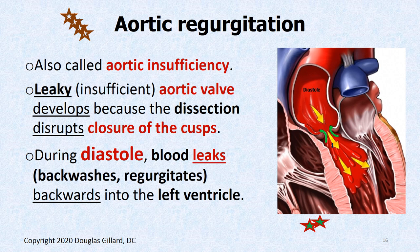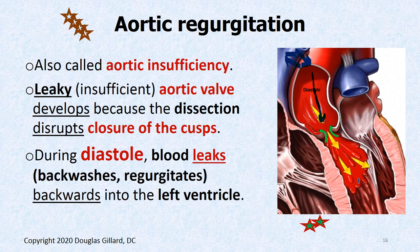Let's talk about aortic regurgitation. Whether it comes from a DeBakey 1, DeBakey 2, Stanford A aneurysm, or maybe Marfan syndrome — if this valve doesn't catch blood during diastole, it's going to gush into the left ventricle. It's going to overfill the left ventricle because we're only supposed to have one source of ventricular filling from the left atrium. Now we've got two sources, so you're going to overfill the ventricle. During diastole, the artery snaps back and pushes blood back toward the heart, and the aortic valve is supposed to catch that blood and pop shut. If this valve doesn't work, you're going to backwash blood right into the left ventricle. That is called aortic regurgitation.